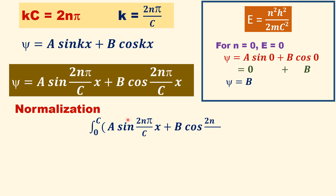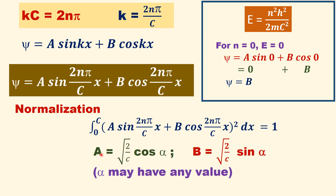By applying the normalization condition, the integral from 0 to c of psi-squared dx equal to 1. On solving this, the values are: A equal to square root of 2 by c, B equal to square root of 2 by c, where alpha may have any value.